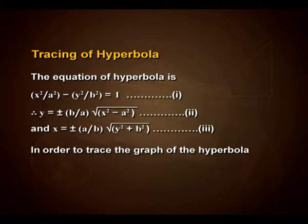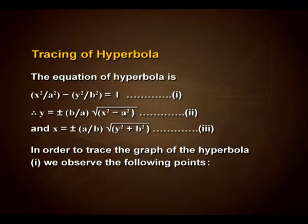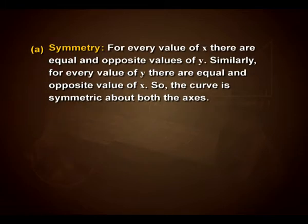In order to trace the graph of the hyperbola, we observe the following points. Symmetry: for every value of x, there are equal and opposite values of y. Similarly, for every value of y, there are equal and opposite values of x. So the curve is symmetric about both axes.